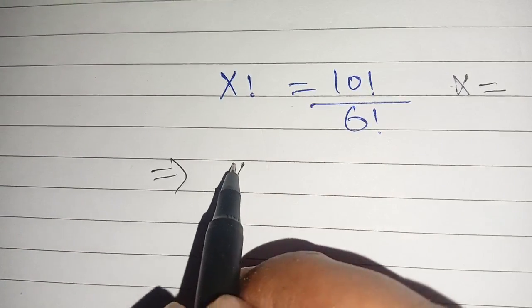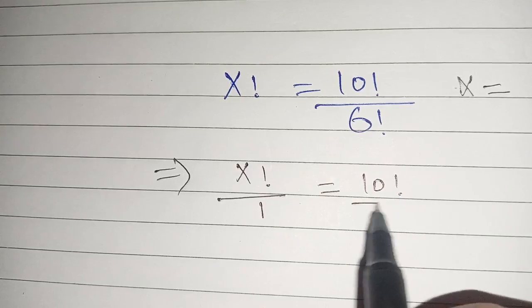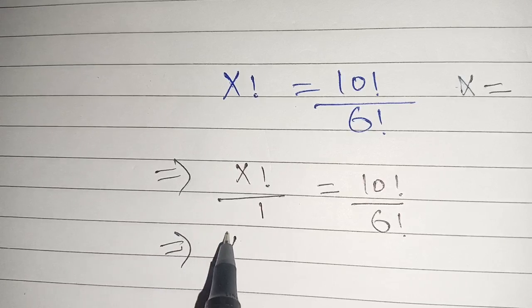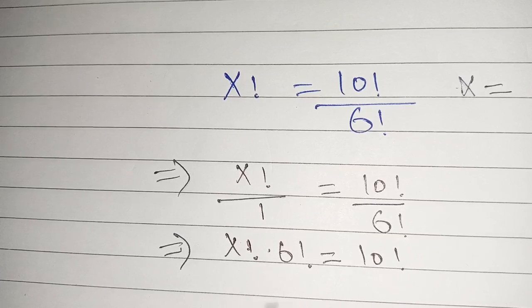Now we have x factorial divided by 1 is equal to 10 factorial divided by 6 factorial. Now cross multiply it and we get x factorial times 6 factorial is equal to 10 factorial.